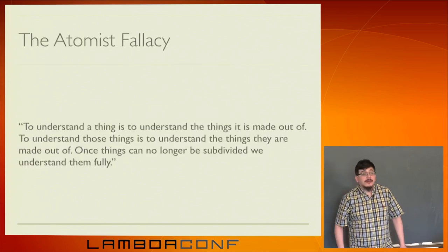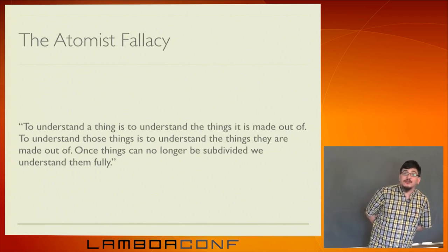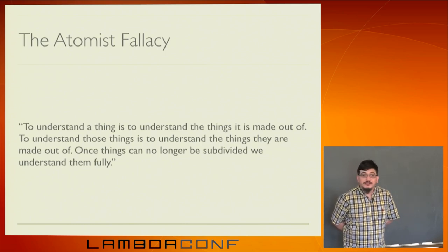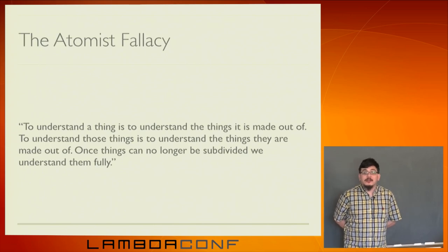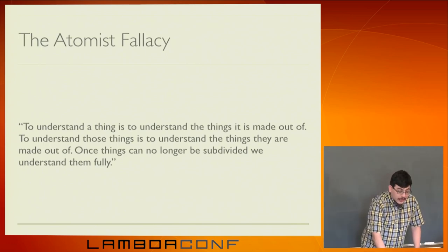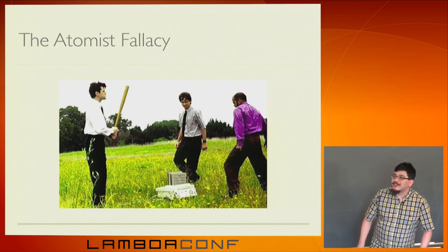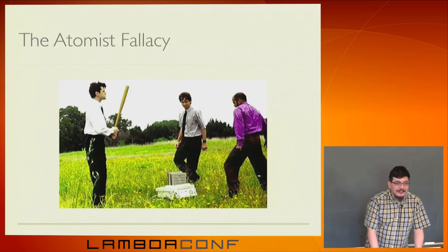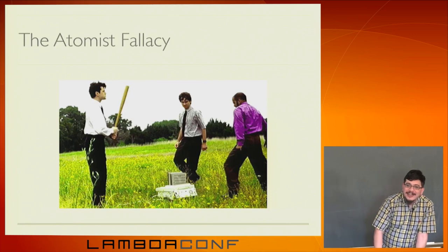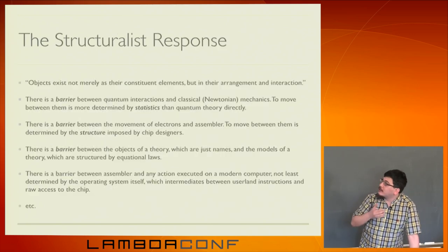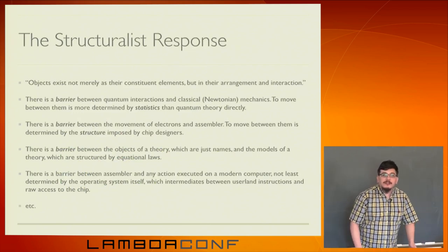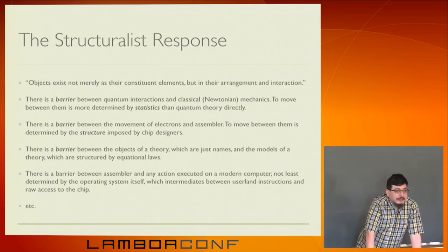The atomist fallacy is: when you want to understand a thing, you understand the things it's made of, which are in turn made of smaller things, and those are made of yet smaller things. Once you've taken things down to the very smallest things, you've understood everything about the big thing. The philosophical response — and there's been a lot of interesting discussion on this — generally falls under some version of structuralism: that objects don't exist merely as constituent elements, but it's the arrangements that matter more than what the things are made of inside them.